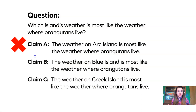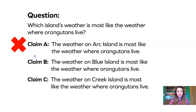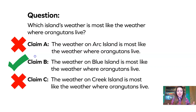Going back to our claims, we already know it can't be A. Claim B says the weather on Blue Island is most like the weather where orangutans live. Yeah, we have data and evidence to show that Claim B is the one we should support. What about Claim C — the weather on Creek Island is most like the weather where orangutans live? No, we know that Creek Island isn't as hot or as rainy as Blue Island.